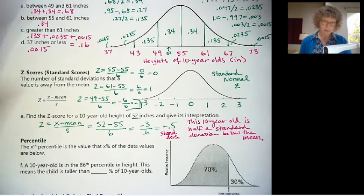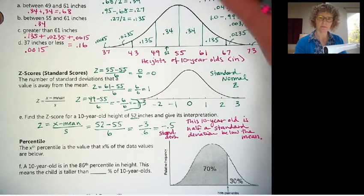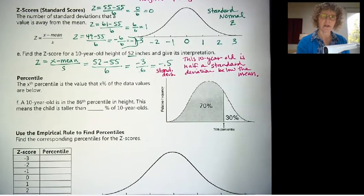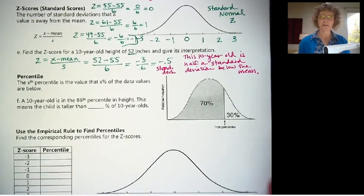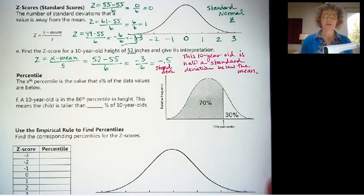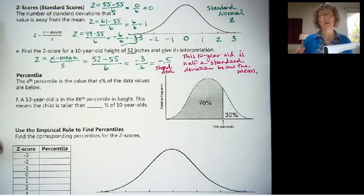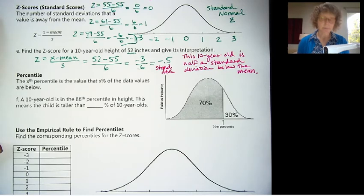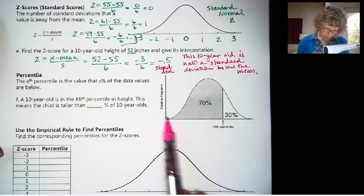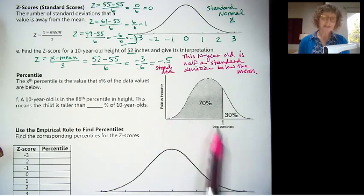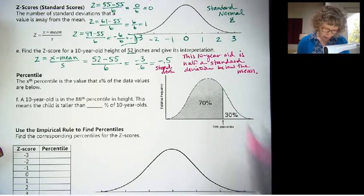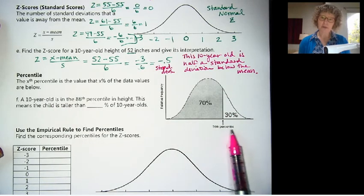The units on the z-score, you see how we have inches over inches, so they cancel each other out? I like to think of the units on the z-score as actual standard deviations. Okay, so that's how you calculate a z-score. It's by taking whatever value they give us, subtract the mean, and divide by the standard deviation. It works no matter what your mean and standard deviation are. That will center everything at 0 and turn it into 1, 2, 3, and negative 1, negative 2, negative 3. Okay, so let's look at percentiles now.